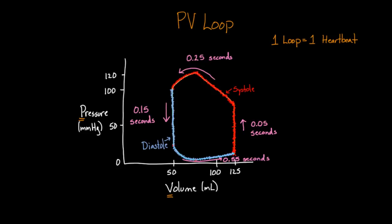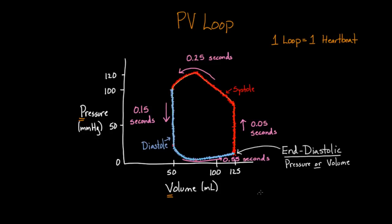You'll hear phrases like "end diastolic" pressure or volume. End diastolic is literally what it sounds like — the end of diastole, where I drew an arrow. It's a time point: at the moment diastole is done, you have a certain pressure or volume. You could also say "start systolic" — that's the same idea, where systole is beginning and diastole is ending. But you don't really hear that term; you usually just hear "end diastolic."